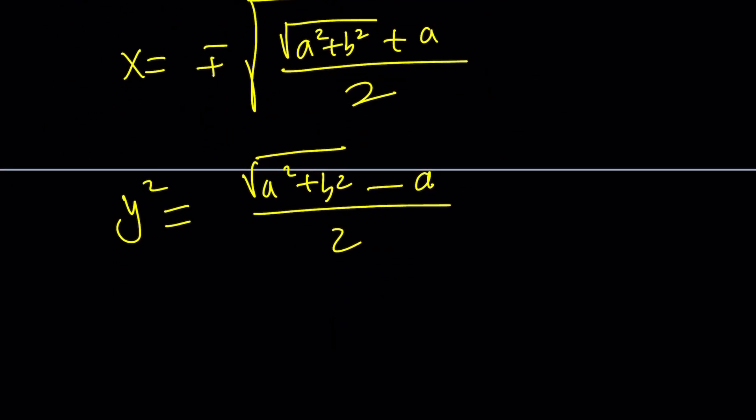And to find x, obviously you're going to go with the plus minus sign and a giant square root under the radical, you're going to have another square root plus a divided by 2. And by the same token, y squared should be square root of a squared plus b squared minus a this time divided by 2. Because to find y squared you should subtract these equations. And y is going to be plus minus the square root of a squared plus b squared minus a divided by 2.